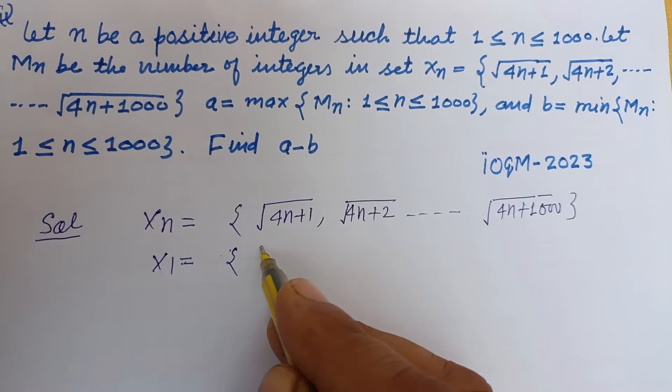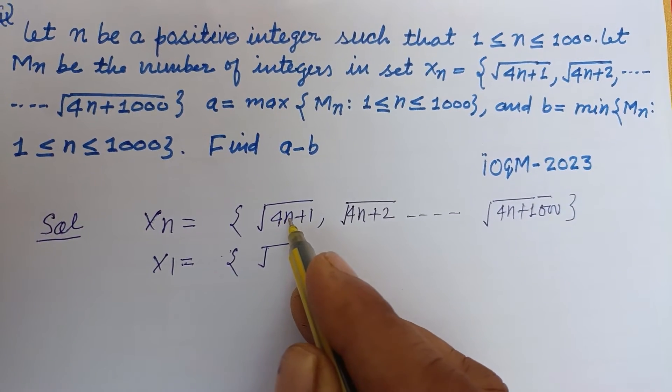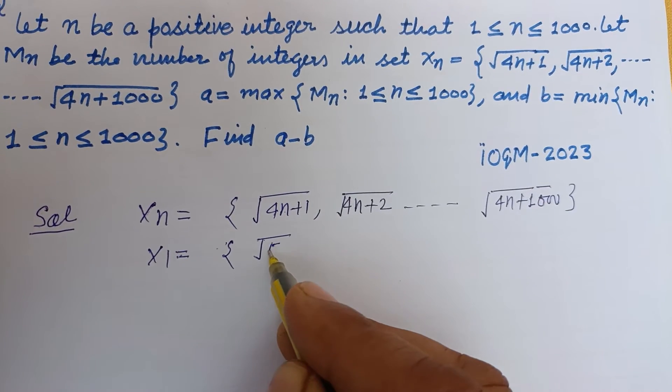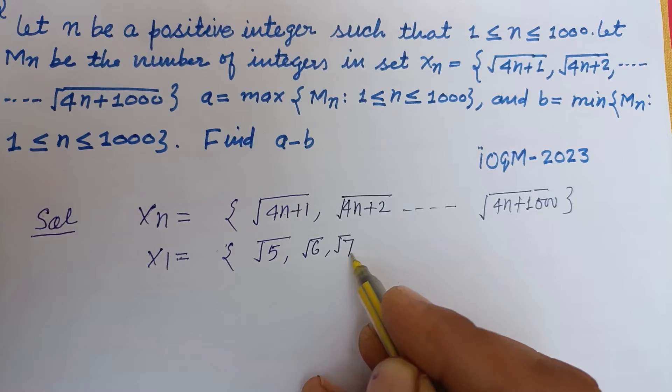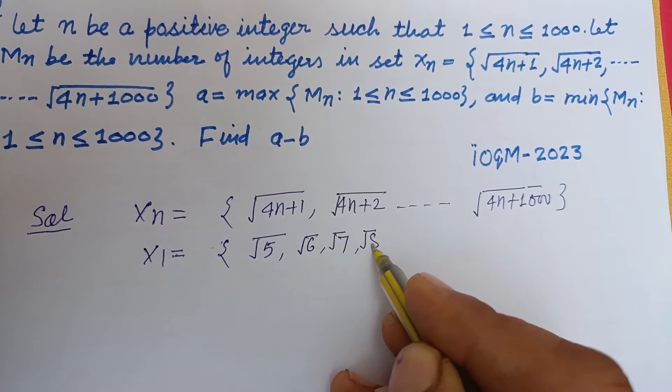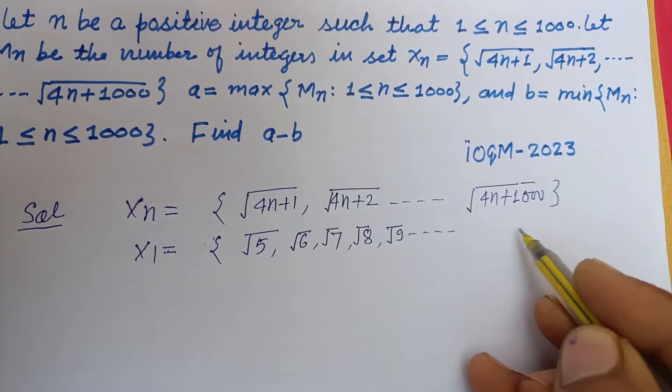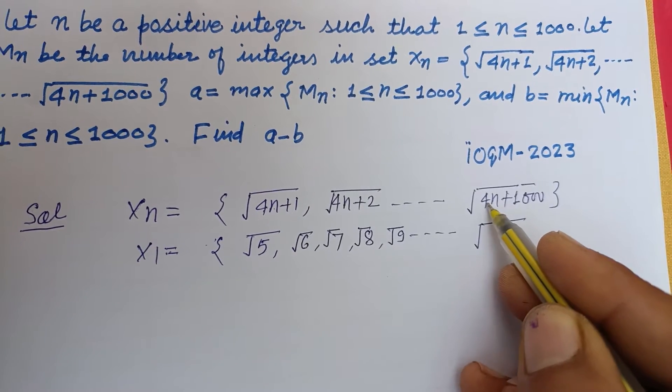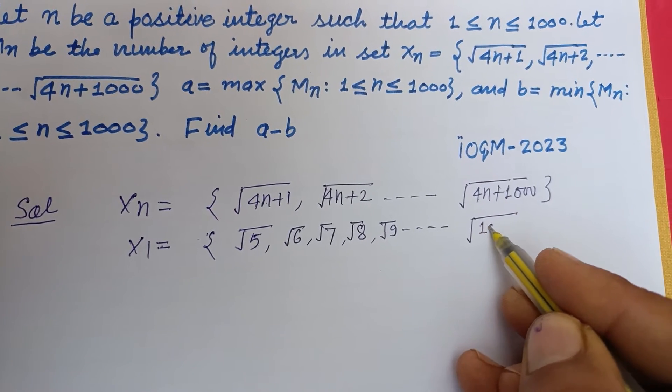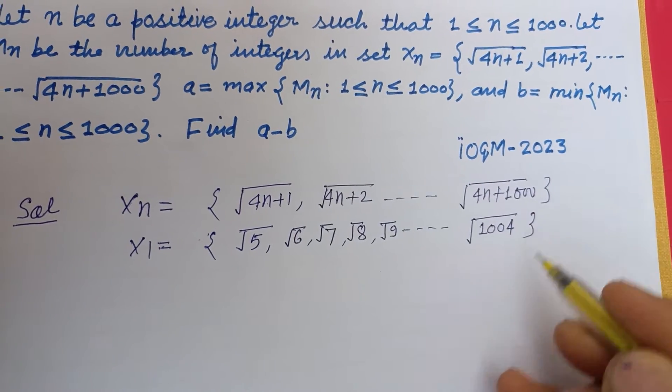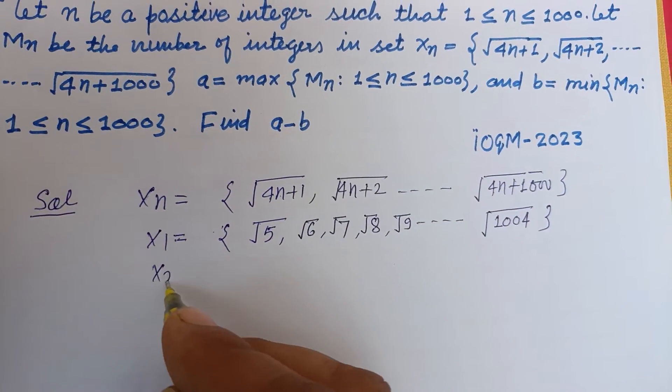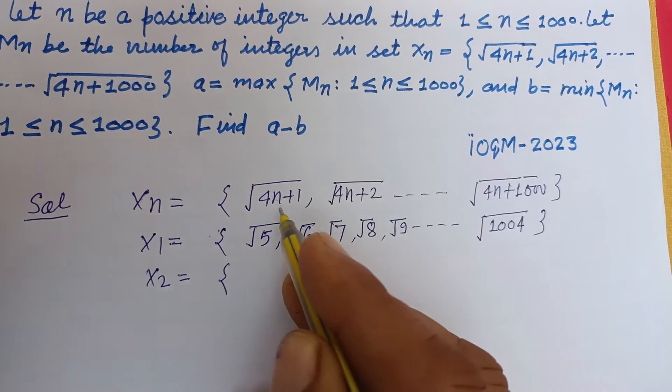The set will be √(4×1+1), this is √5, √6, √7, √8, √9, and so on. This is 4 plus 1000, which is √1004.